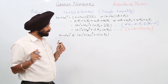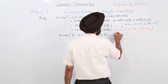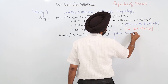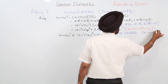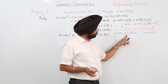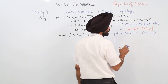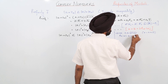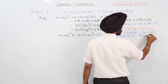From property 6: for Z = A + iB, A ≤ √(A² + B²), meaning the real part A is always less than or equal to the modulus. So Re(Z) ≤ |Z|. This is property 6, which states that the real part of a complex number can never exceed its absolute value.